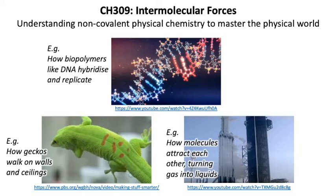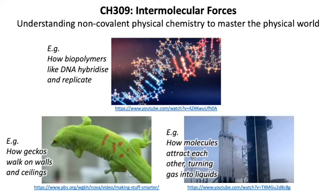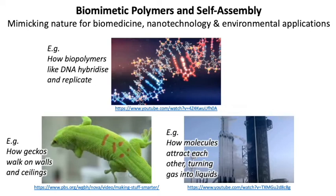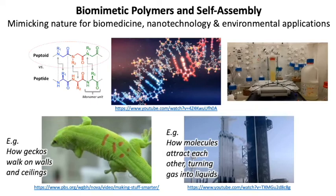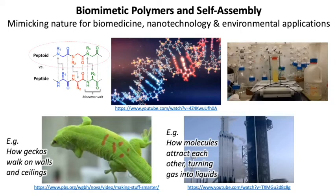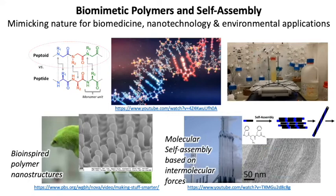If you can make molecules that can have specific intermolecular interactions like those in nature, you can have many new applications. In my lab, we do exactly that, observing how natural molecules and polymers work, and developing new versions of these molecules that can be synthesized or controlled more easily. We use these biomimetic molecules to make nanomaterials, or assemble them on a molecular level for use in medicine, nanotechnology, and in sensors.